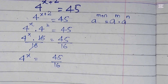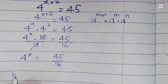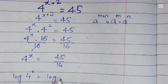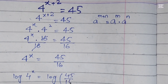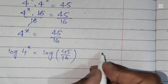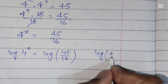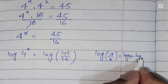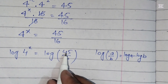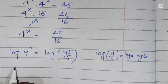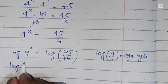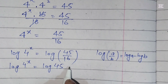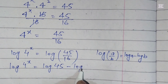Now we will take the logarithm with base 10 on both sides: log of 4 power x equals log of 45 over 16. We know the formula: log of a over b equals log of a minus log of b. Here a is 45 and b is 16, so it becomes log of 4 power x equals log of 45 minus log of 16.